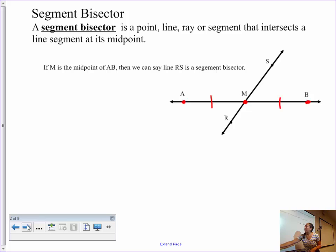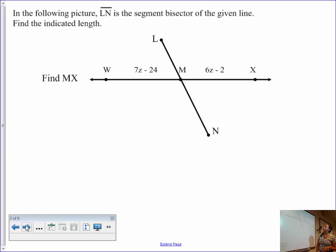That way when we set up equations, we can set things equal. So in this picture, LN is the segment bisector. So what that means again, and I recommend marking it, pause it, draw it, mark it. We know that since this is the bisector, WM is congruent to MX. Using the information provided, I want to be able to find MX. So if they're congruent, then they're equal. And I can set up the following equation. Hopefully you've tried this on your own already. If not, pause it now.